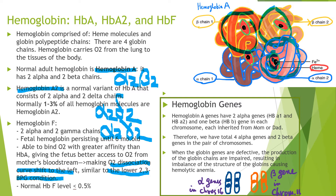This is a common frequent board question. The normal hemoglobin F level is 0.5% or less.